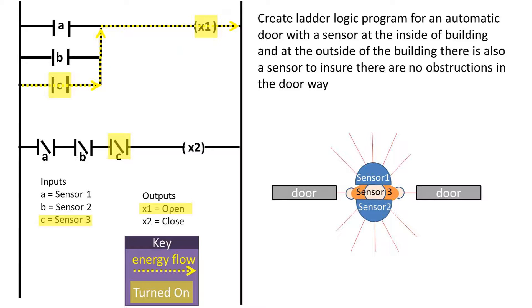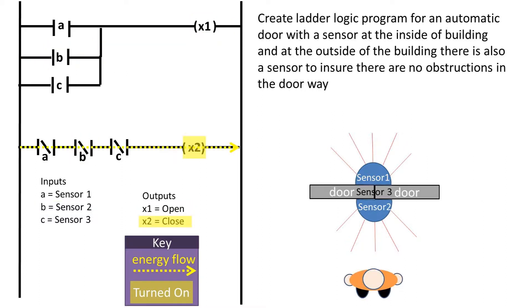Next, the person walks into the doorway, and sensor 3 turns on and keeps the door open. After that, the person walks to the other side of the door, where sensor 2 turns on and keeps the door open. And finally, the person is out of range of all the sensors, and the door closes again.